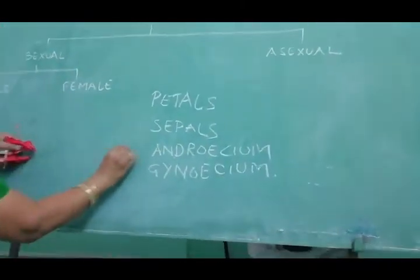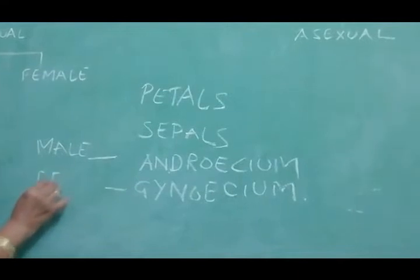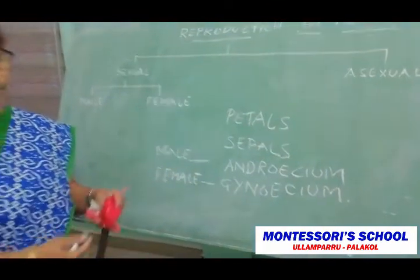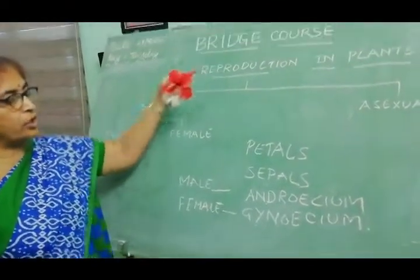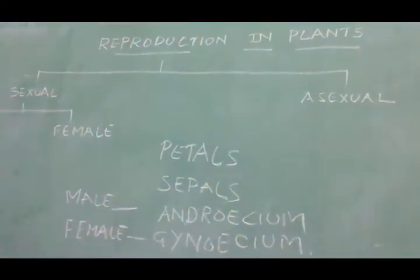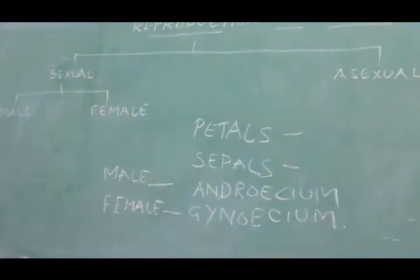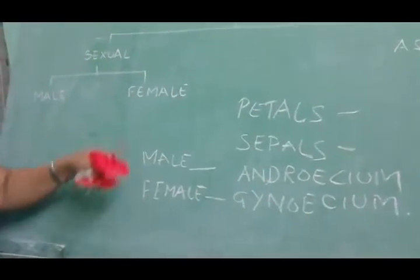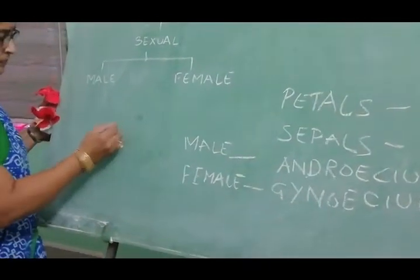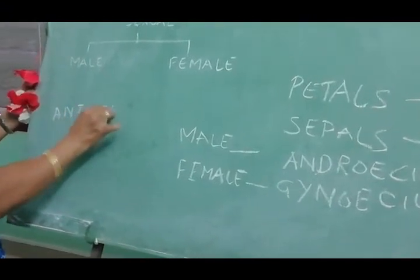This is the male part and this is the female part. These two take the most important part in the reproduction of the plant. The petals and sepals are accessory parts — they don't take part directly in reproduction. The androecium, or the male part, consists of two things: the anther and the stamen.